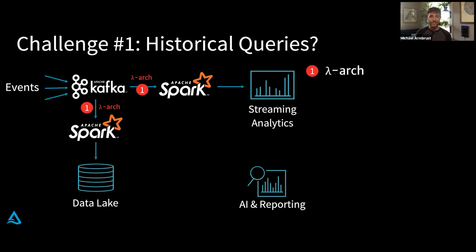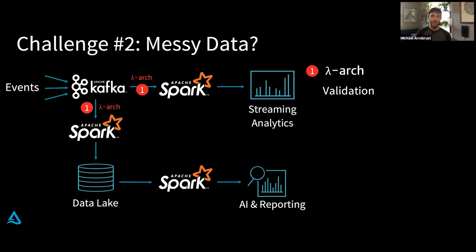We set up the Lambda architecture, we start storing data in the data lake and can do AI and reporting directly out of that data lake we created. Done, right? That unfortunately brings us to challenge number two, which is messy data.